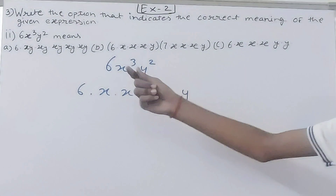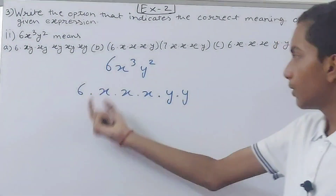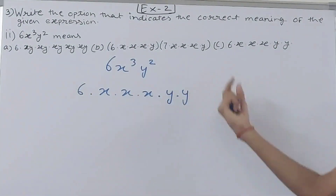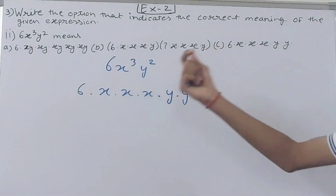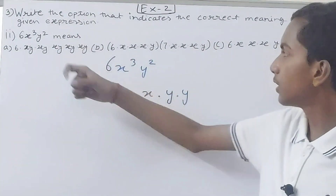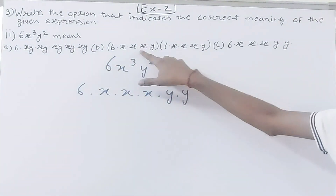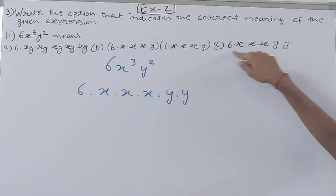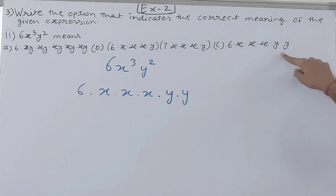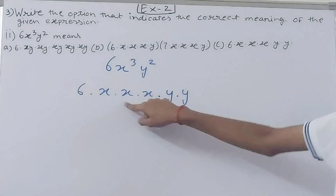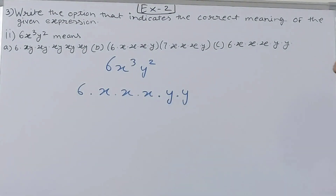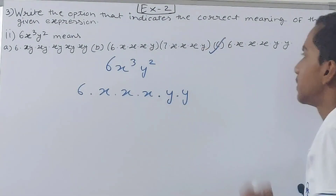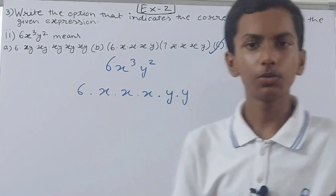So the full expansion is 6 into x into x into x into y into y. Looking at the options, one option has 6 into x, x, x and then y, y — it exactly matches. So Option C is correct here as well.